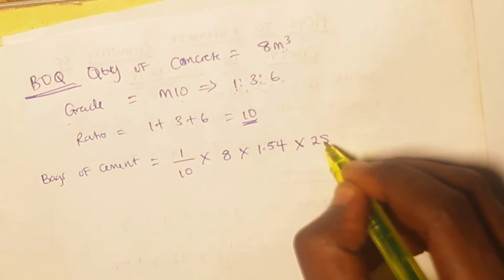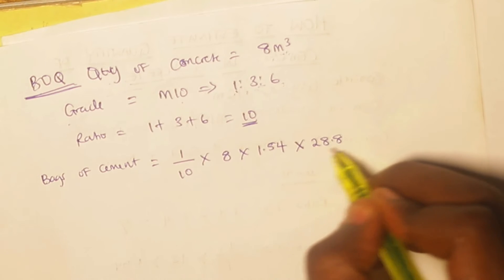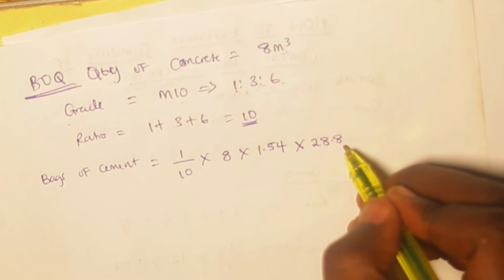And then the next thing is going to be multiplied by - we already know that for one meters cube of concrete we are going to make use of 28.8 bags of cement. I've already established that fact, so I'll just bring it down directly. This is just a constant: 28.8 bags of cement for one meters cube of concrete.